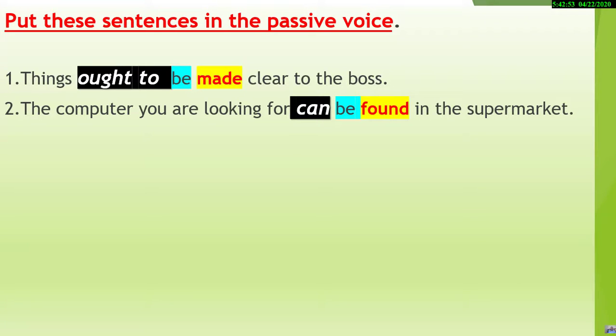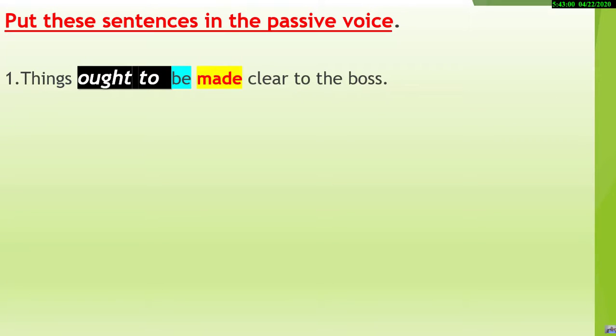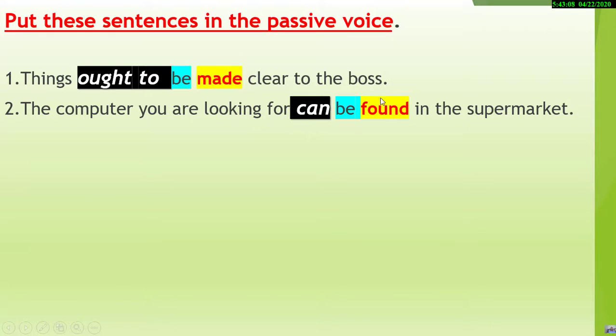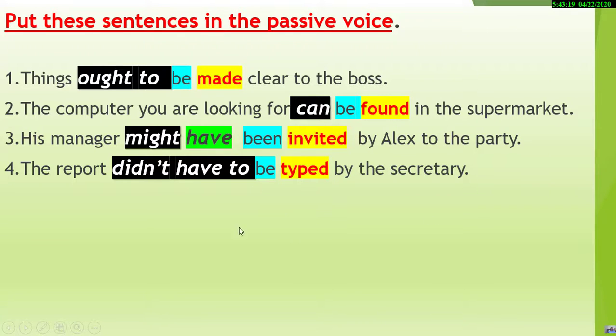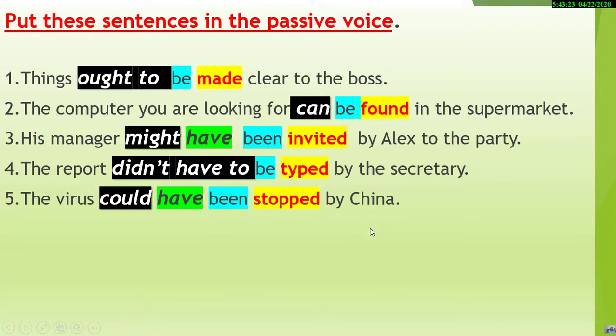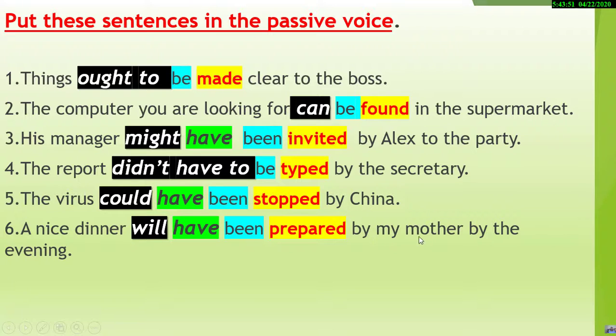Let's look at the answers. One: 'Things ought to be made clear to the boss.' Two: 'The computer you are looking for can be found in the supermarket.' Three: 'His manager might have been invited by Alex to the party.' Four: 'The report didn't have to be typed by the secretary.' Five: 'The virus could have been stopped by China.' Six: 'A nice dinner will have been prepared by my mother by the evening.' That's it for this lesson. If you have any questions, don't hesitate to write me in the comment box. Thank you for watching, goodbye!